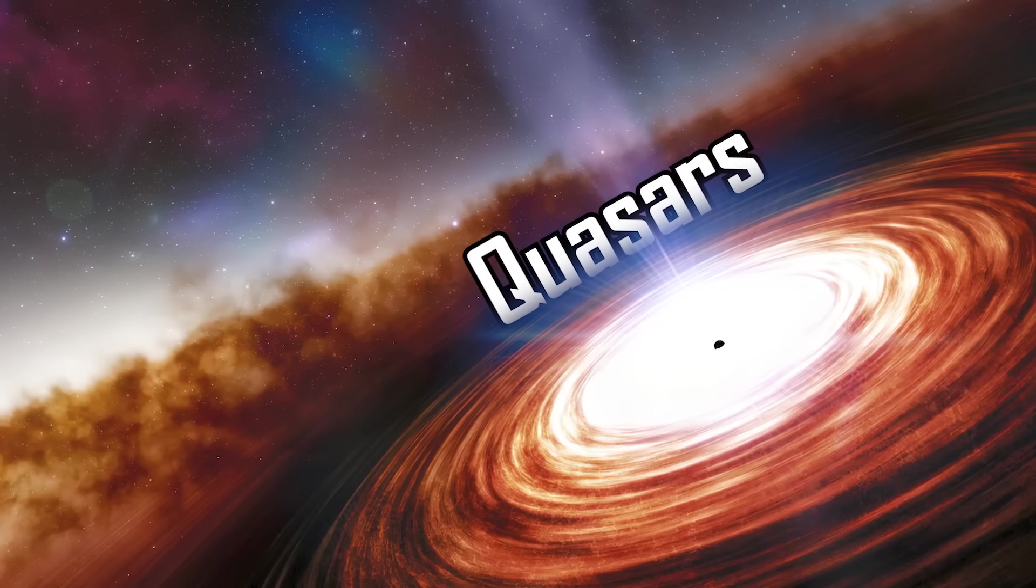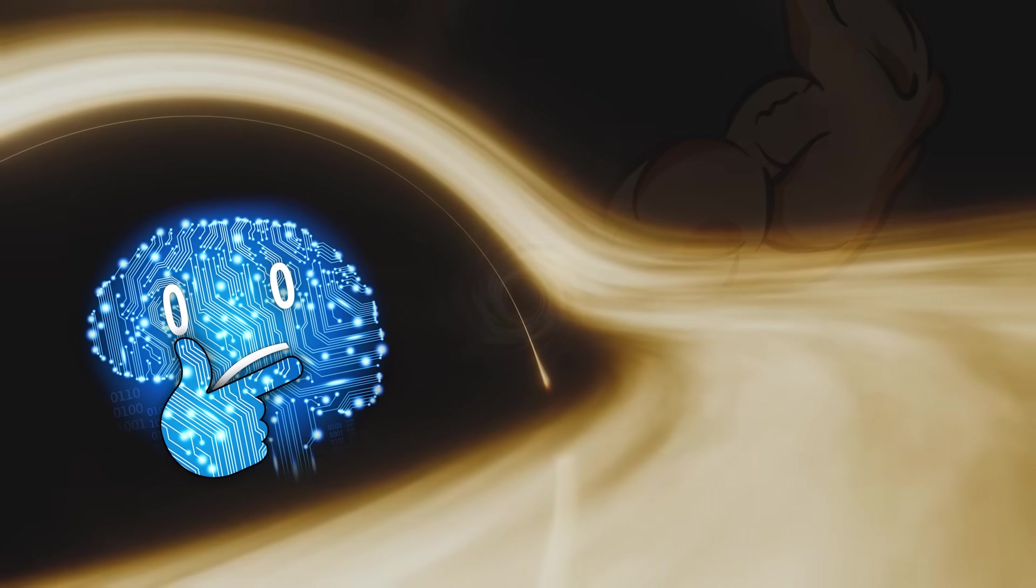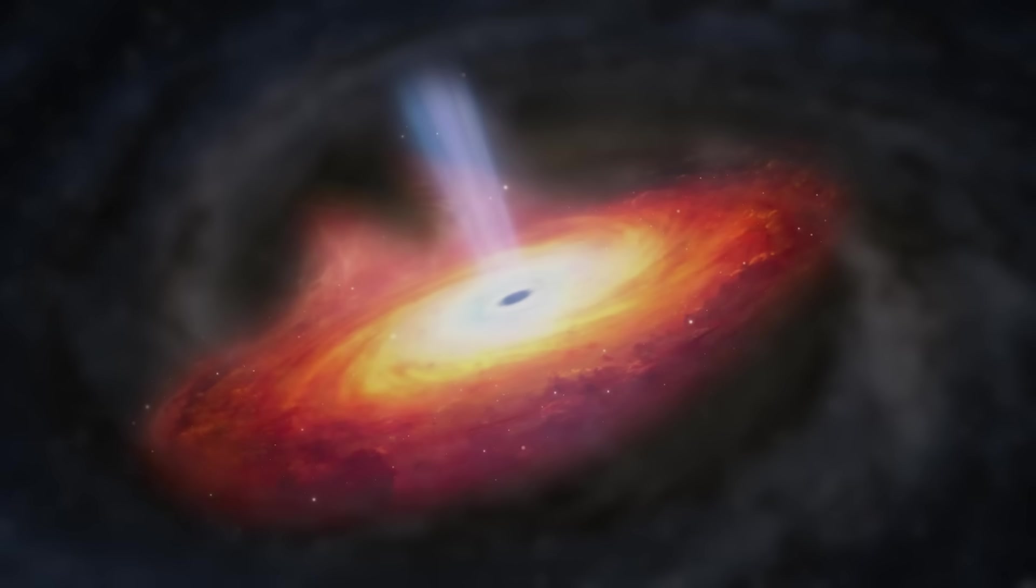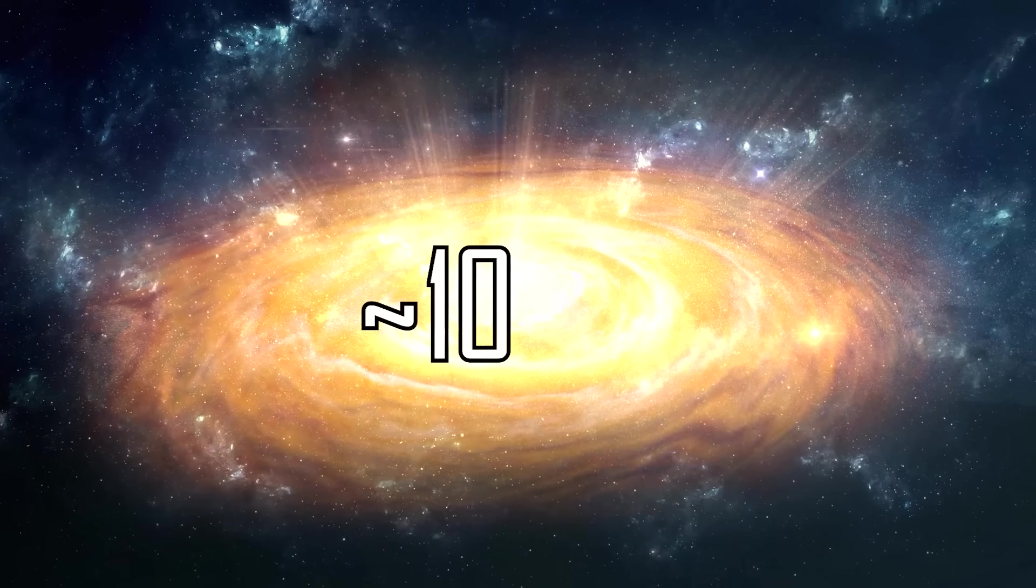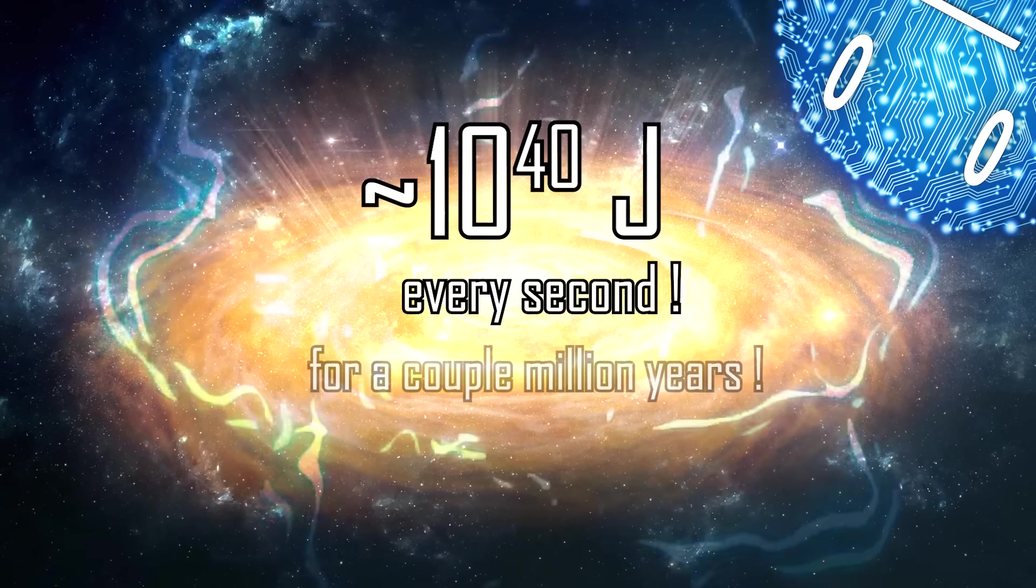Quasars. What happens when you give a central supermassive black hole access to all the intergalactic gas it can possibly feed on? You get an accretion disk around it so hot and so bright that it outshines the entire damn galaxy. They release around 10 to the power of 40 joules of energy. Every second, for a couple million years.